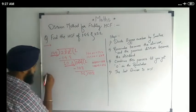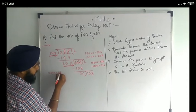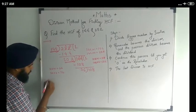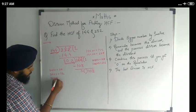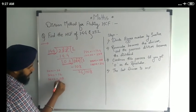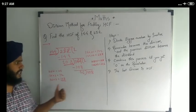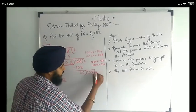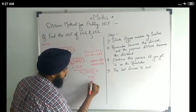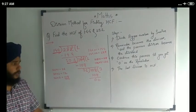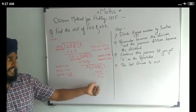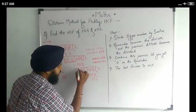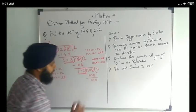So 36 divides 108. 36 ones are 36. 36 twos are 72. 36 threes are 108. So 108 is completely divisible by 36. The remainder is 0. When we got remainder 0, the last divisor is 36. So the HCF of 144 and 252 is 36.